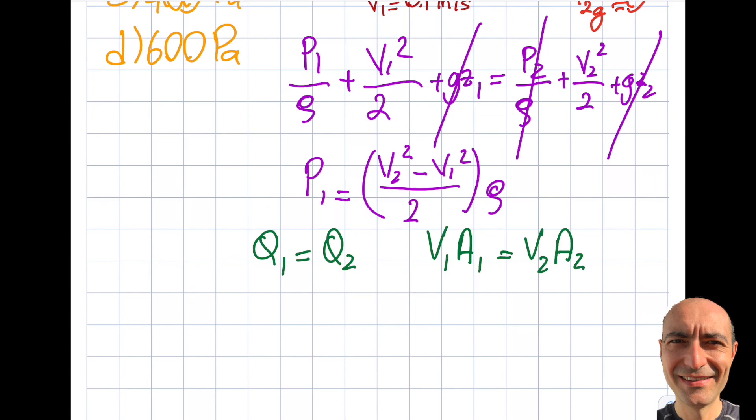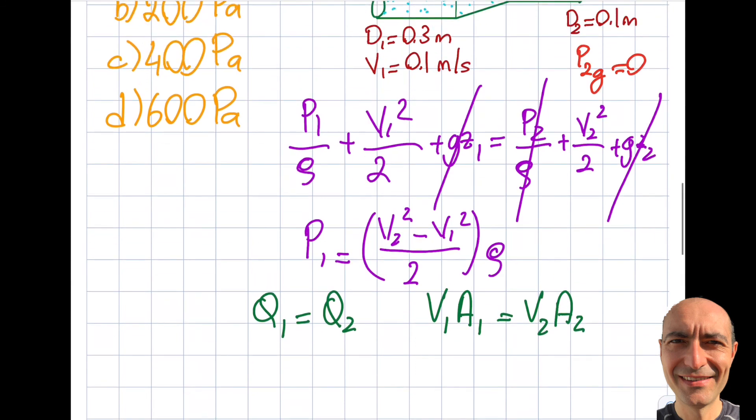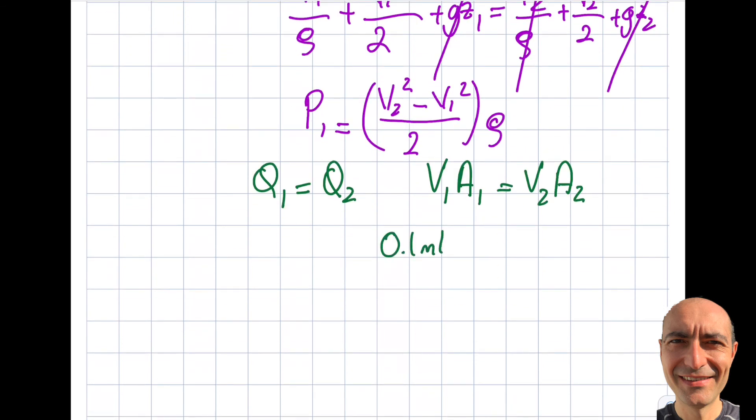Let's plug in numbers. V1 is 0.1 meters per second, area is π/4 times 0.3 squared, this equals V2 times π/4 times 0.1 squared. These meter squared terms cancel, π/4 cancels, this is 9, this is 1.